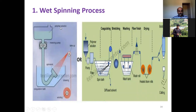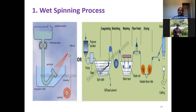The key parts of the process are: polymer solution, metering pump, spinneret, coagulation bath, drawing, and winding. The polymer is processed through extrusion into a form with uniform construction.